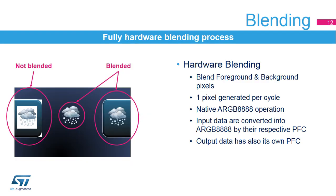The fully hardware blender blends a foreground image and a background image with transparency. This can be used to draw bitmap images of any shape with a perfect rendering. One pixel is generated per cycle, making this complex operation much more efficient than if it was done by the CPU. The resulting pixel can be coded independently from the source thanks to the output pixel format converter.